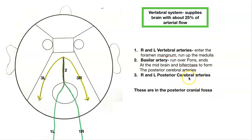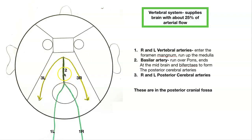Posterior cerebral arteries are in the posterior cranial fossa. What does cerebral mean? It's going to the cerebral hemispheres — you have a right cerebral hemisphere and a left cerebral hemisphere, and these arteries go to their respective hemispheres. The basilar artery is a midline structure traveling right over the pons. Stop the video and quickly draw this in on your worksheet, making sure you've got your posterior cerebral arteries in your posterior cranial fossa. We're going to add to this drawing.